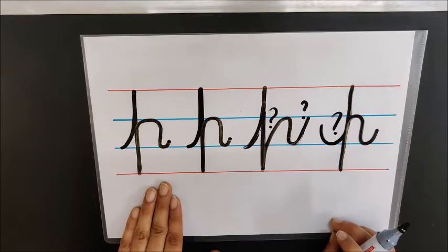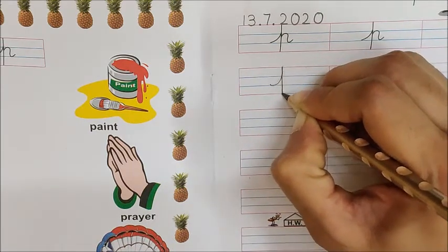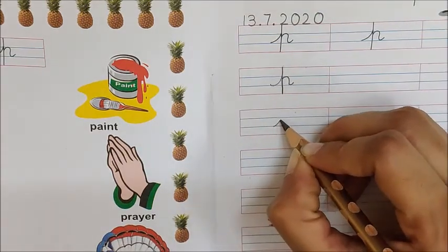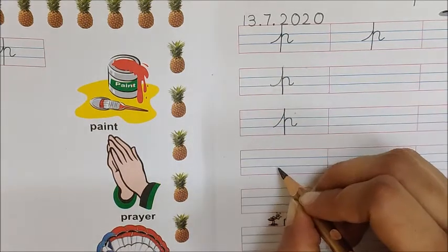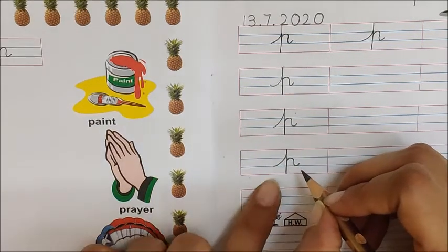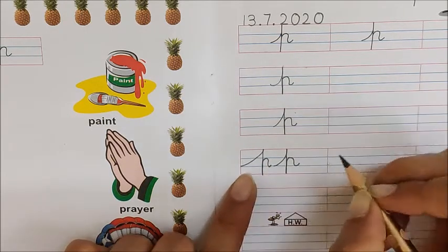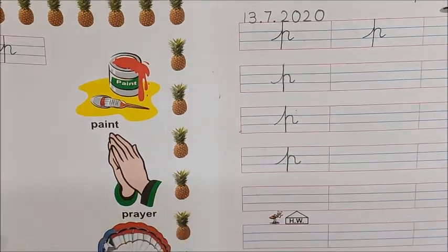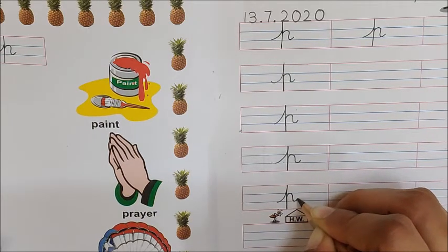So let us start writing in our book Getting Ready to Write, page number 21. I am writing the first column — go up, come down, again go up, down, and a small tail. P P. Again: go up, come down, up, down, and a small tail. P P. Don't make a very big hand — it has to be a small hand. Again we will see: go up, come down, up, down, and a small tail.